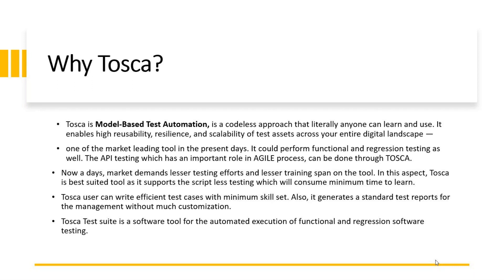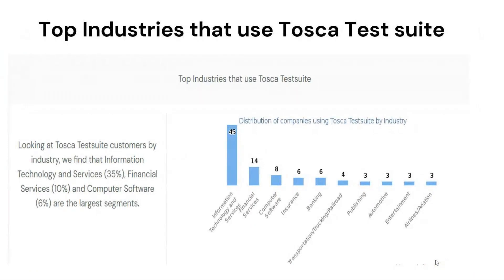Tosca test suite is a software tool for automated execution of functional and regression testing. Looking at where the tool is being adopted, the top industries using Tosca include information technology, banking, transportation, publishing, automotive, and entertainment. Technology and services holds 45%, financial services 14%, and computer science 8% — these are the largest segments using Tosca in their projects.